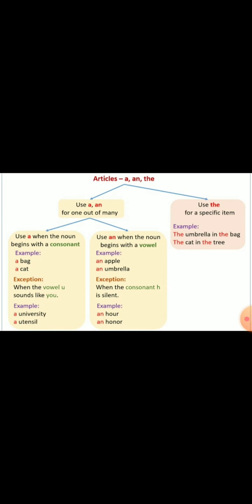Use of a or an for one out of many. Use a when the noun begins with a consonant, for example, a bag, a cat. Use an when the noun begins with a vowel, like an apple, an umbrella.